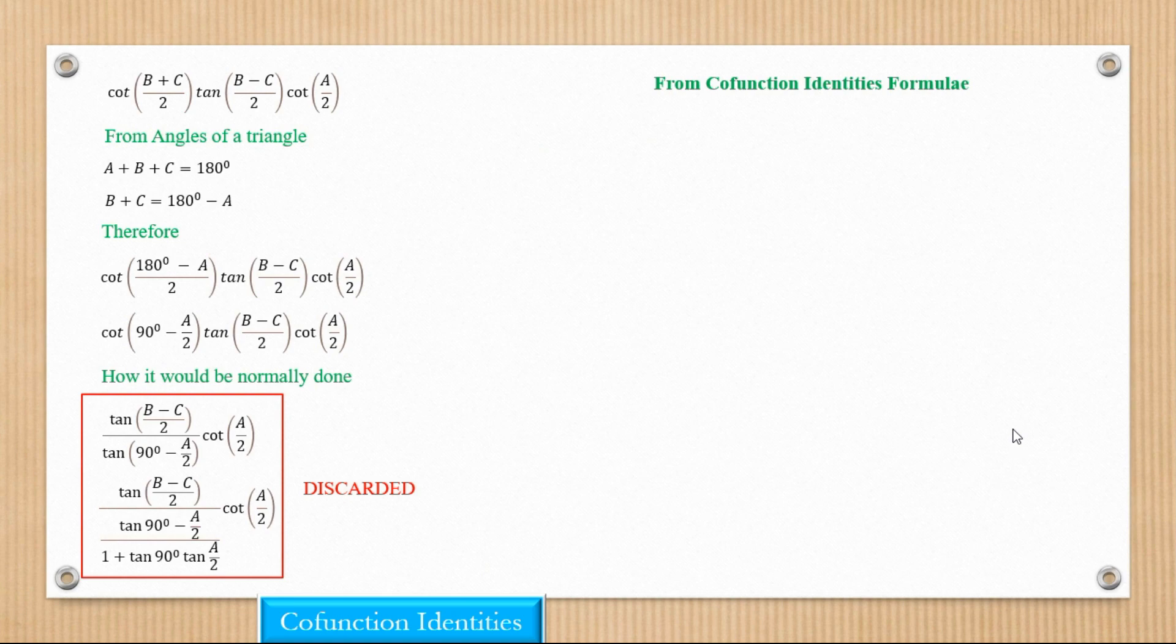So in our cofunction identities, we can actually now see that this is equal to that. All right. So therefore, when we replace this value with a tan(A/2), we can actually have that.